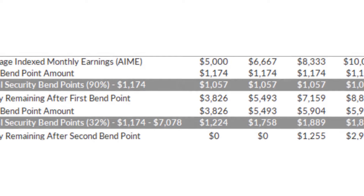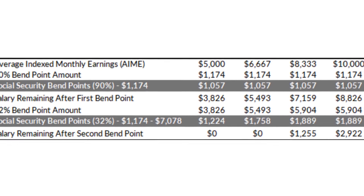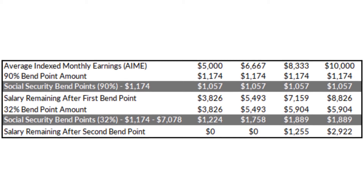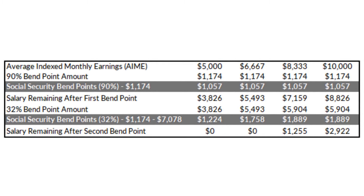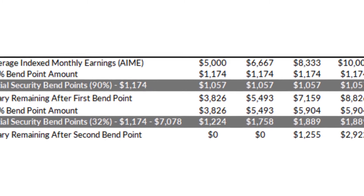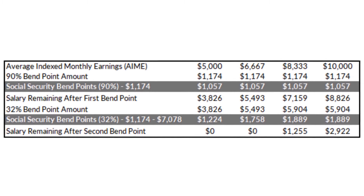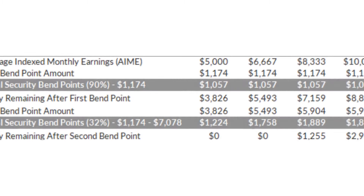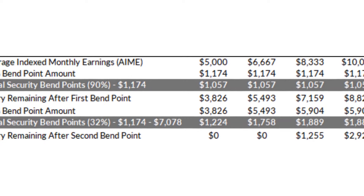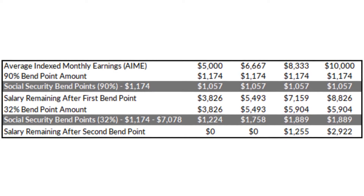For the $80,000 per year salary, you do the same thing. You take the $6,667 AIME and subtract $1,174. Because that amount is still below the $7,078 cap, the remaining $5,493 gets multiplied by 32%, which gives you $1,758 — that's how much you keep from that bracket.